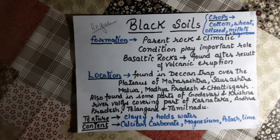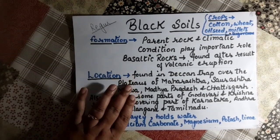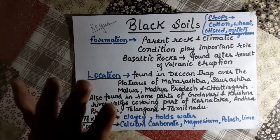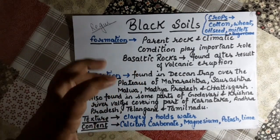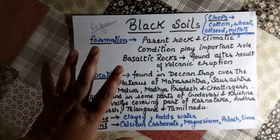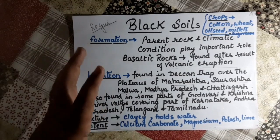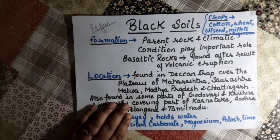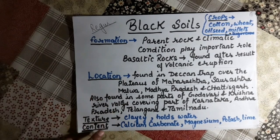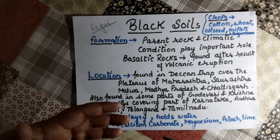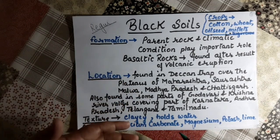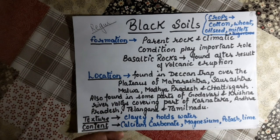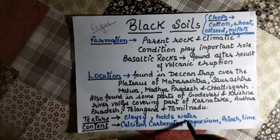An important characteristic of black soil: during the rainy season it becomes sticky and is very difficult to till, so it must be tilled immediately after the first pre-monsoon showers. Due to its high fertility and capacity to hold moisture, black soil has a clayey texture with good water retention properties — it can hold moisture for a long time.